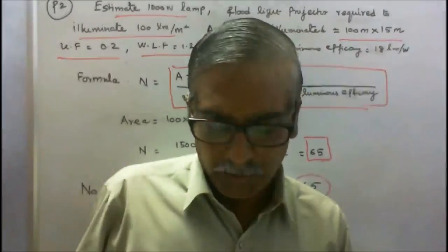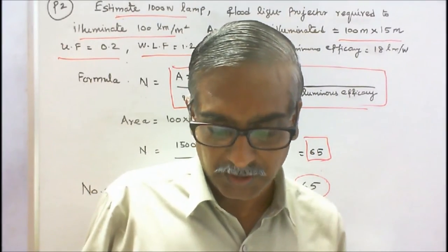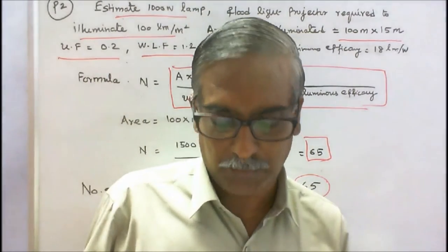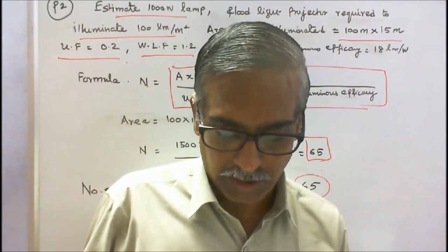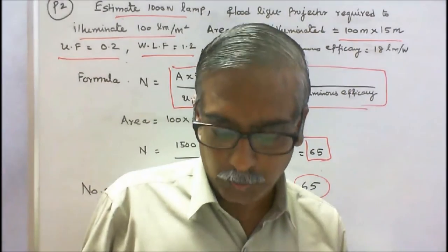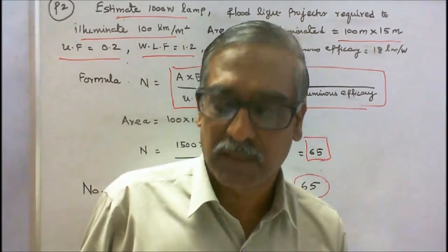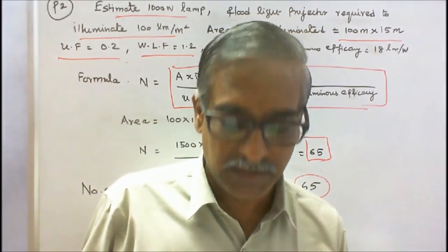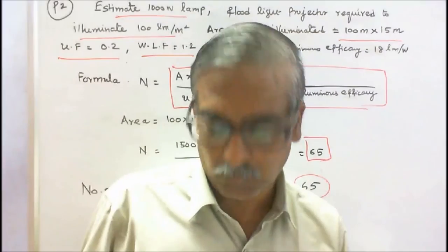Problem 2: The front of a building, 100 meters by 15 meters, is to be illuminated by 1000-watt lamps. Find the number of lamp projectors required. Assume: waste light factor = 1.2, utilization factor = 0.2, depreciation factor = 1.3, and luminous efficacy of 1000-watt lamp = 80 lumens per watt.